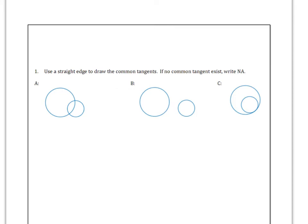In example A, there should be two common tangents. I'm not using a straight edge, so mine might be a little crooked. But this line right here would touch this circle and this circle in exactly one point each. And then down below, there's a second line, and it's a tangent to both circles as well.